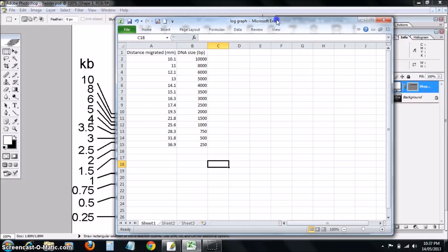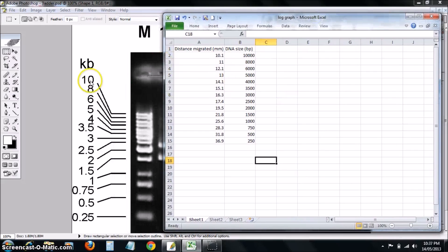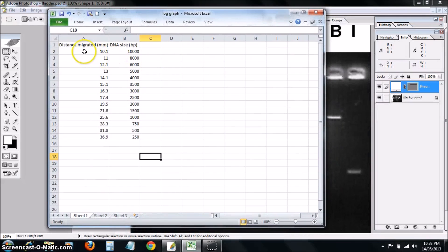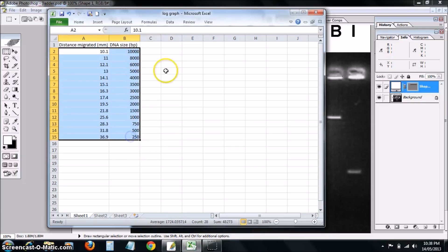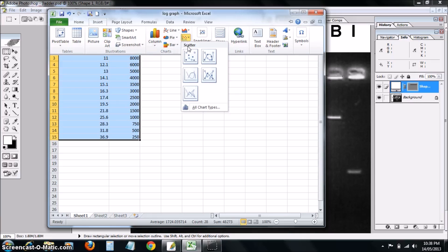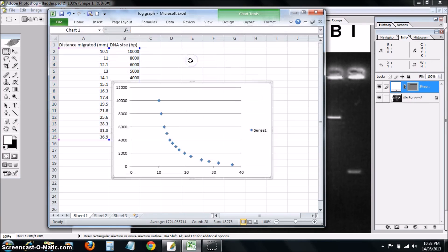Here's one I've prepared before. I've measured all of the distances that the DNA fragments have migrated and linked them up with the sizes of the base pairs. Just highlight the data and insert a scatter plot with no trend line.